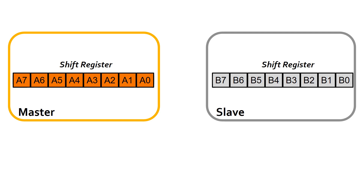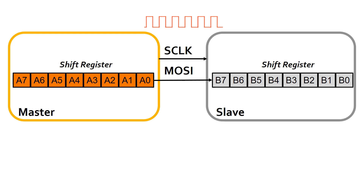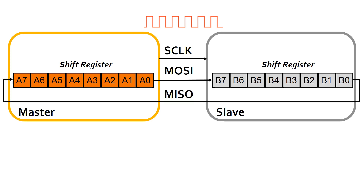SPI uses a simple shift register to transmit data from master to slave and slave to master. Let's try to understand this basic concept of shift register with a simulation. In SPI, both master and slave contain a shift register. Upon each clock, the master shifts a bit from the master shift register to the slave shift register over the MOSI line, which in turn causes a bit shift from the slave shift register to the master shift register over the MISO line.